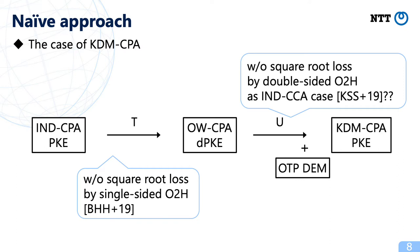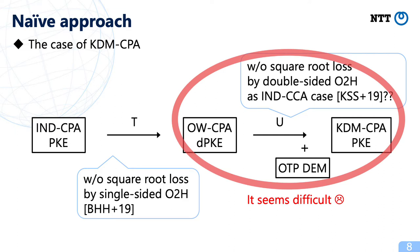I will now talk about the technical overview of this work, focusing on KDM-CPA security. Bindel et al. showed that the one-way CPA security of T can be reduced to the IND-CPA security of the underlying public-key scheme without square root loss. Also, Kuchta et al. showed that the IND-CCA security of U can be reduced to the one-way CPA security of the underlying deterministic public-key scheme without square root loss by using the double-sided one-way-to-hiding lemma. Similarly, we try a similar approach, but we found that such a reduction seems difficult.